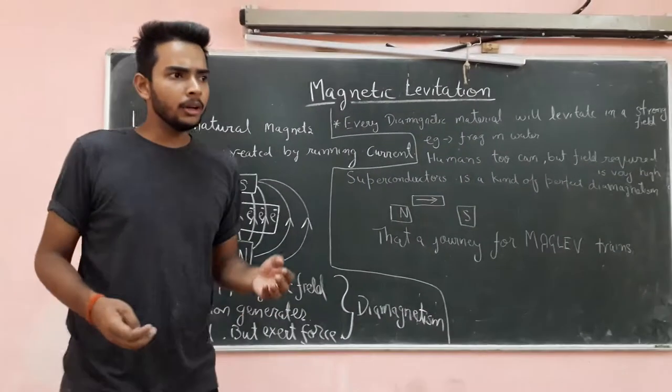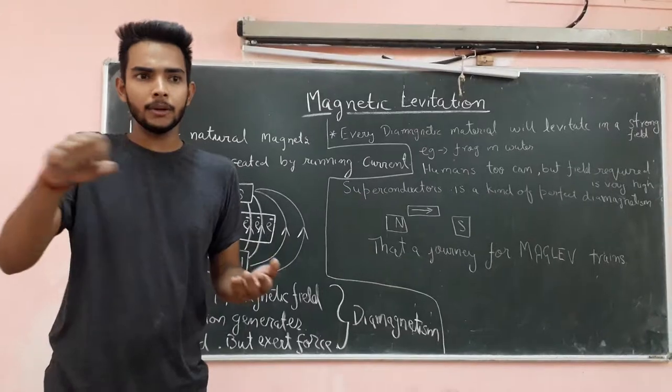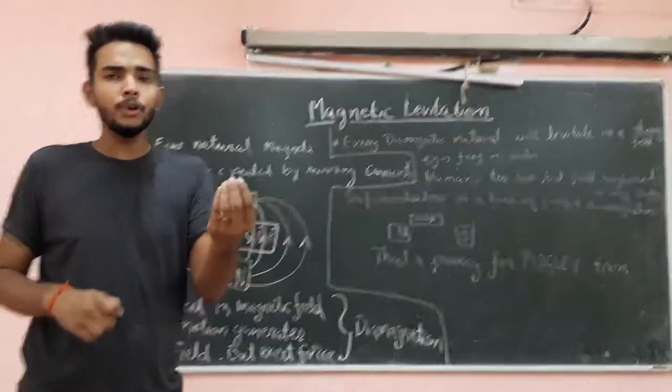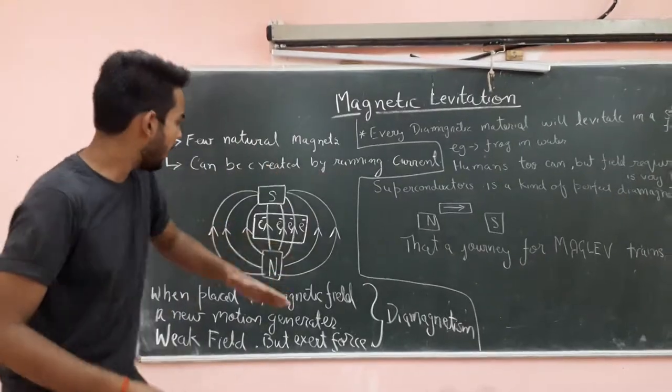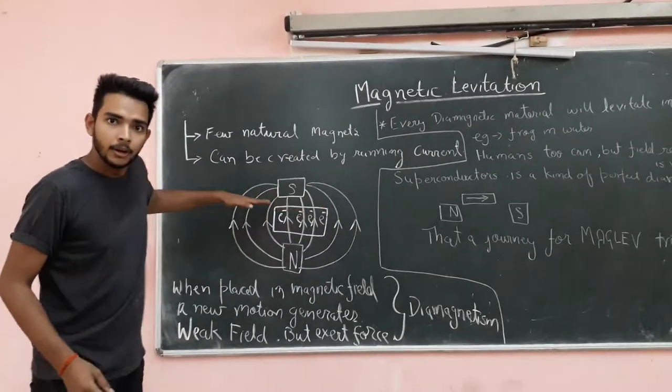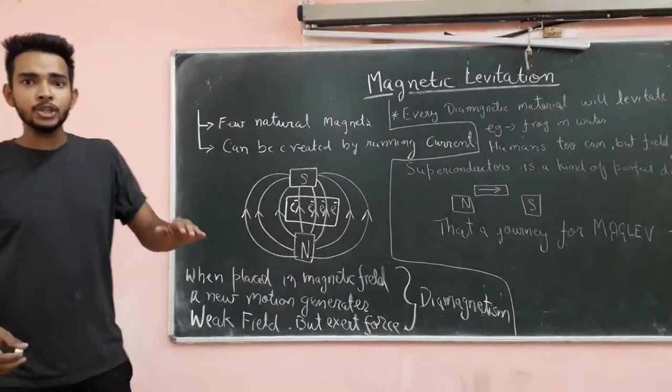Like, a wood you take and if you place a magnet over there, it will always align like this. That property is known as diamagnetism.